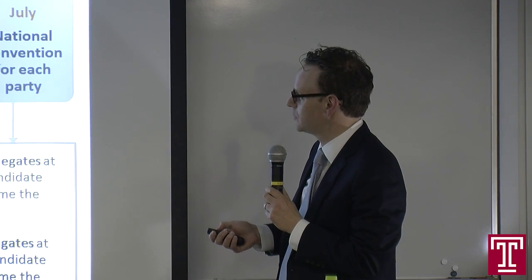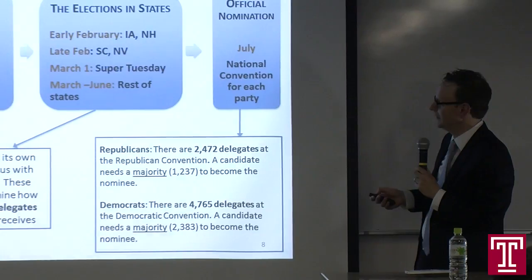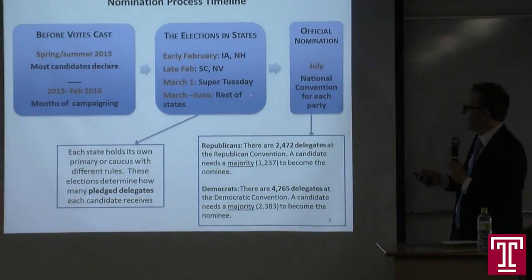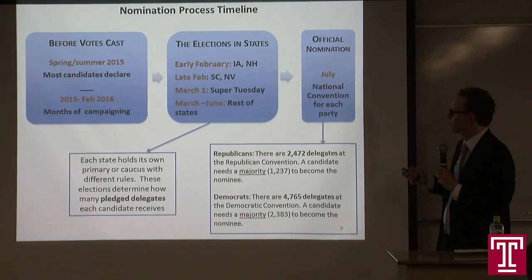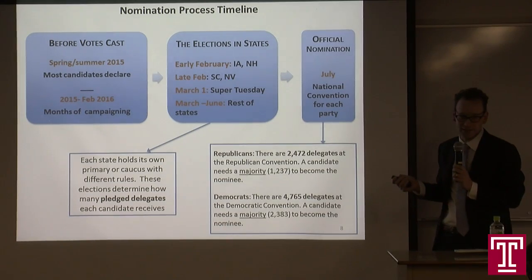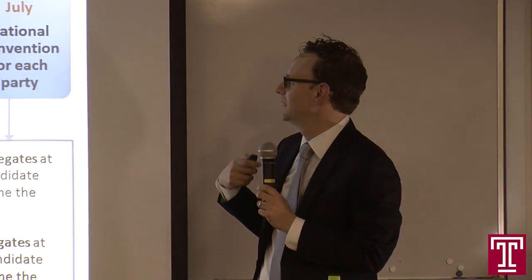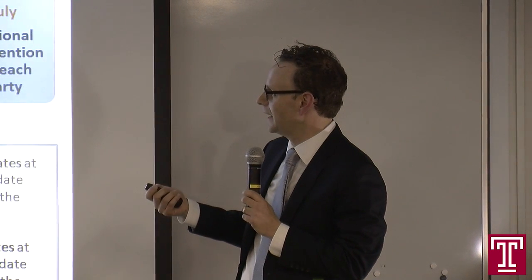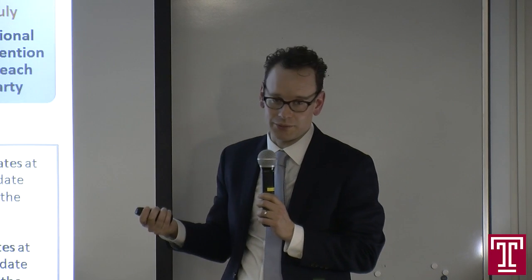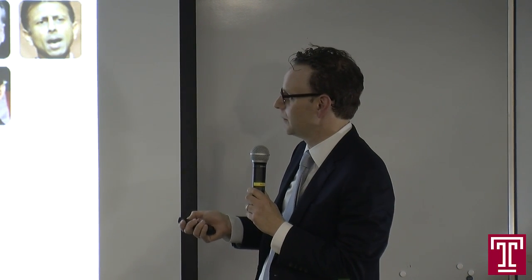Most candidates declared last year and had months of campaigning, debates, and commercials before any voting happened. Voting started in February. The first two states historically are Iowa and New Hampshire. Even though they are relatively small states in terms of delegates, because they are first, they are considered very important. They can provide momentum — additional donations, more media coverage — or on the negative side, if you don't do well, it's difficult to raise money and keep going. A number of candidates dropped out after doing poorly in Iowa and/or New Hampshire.